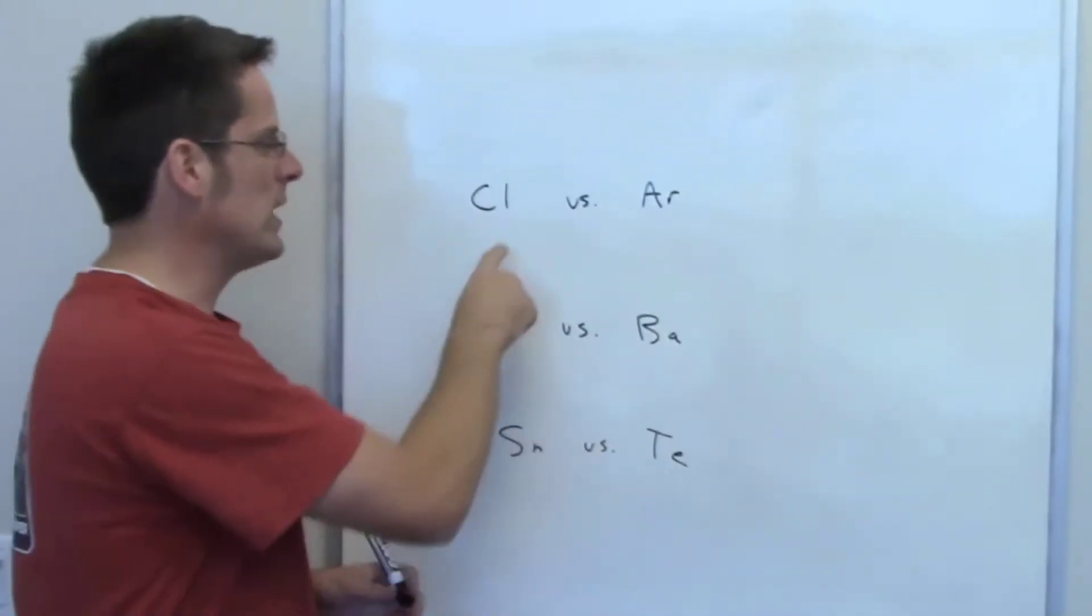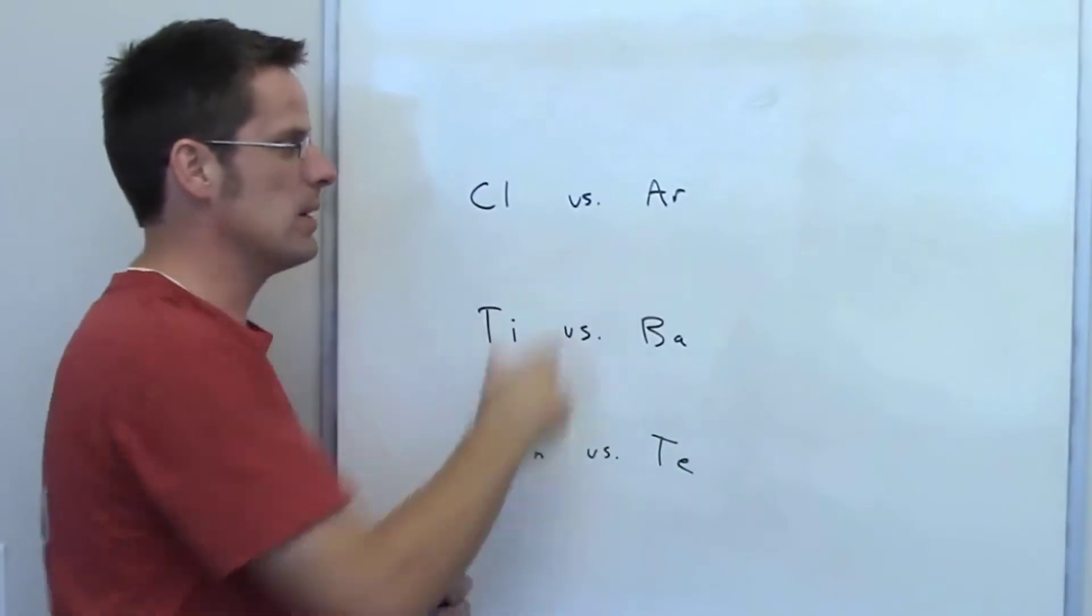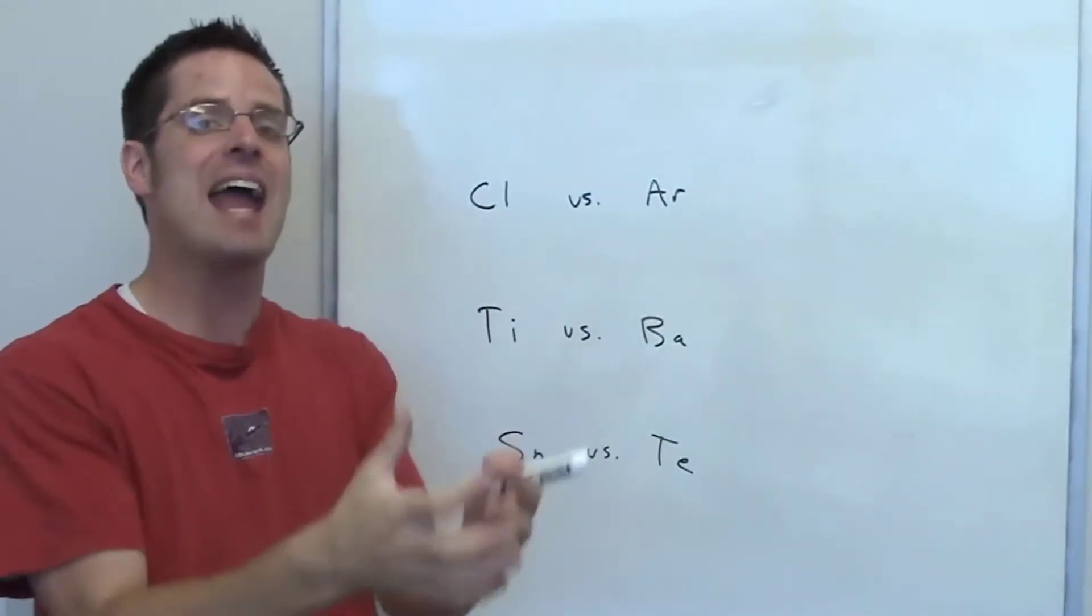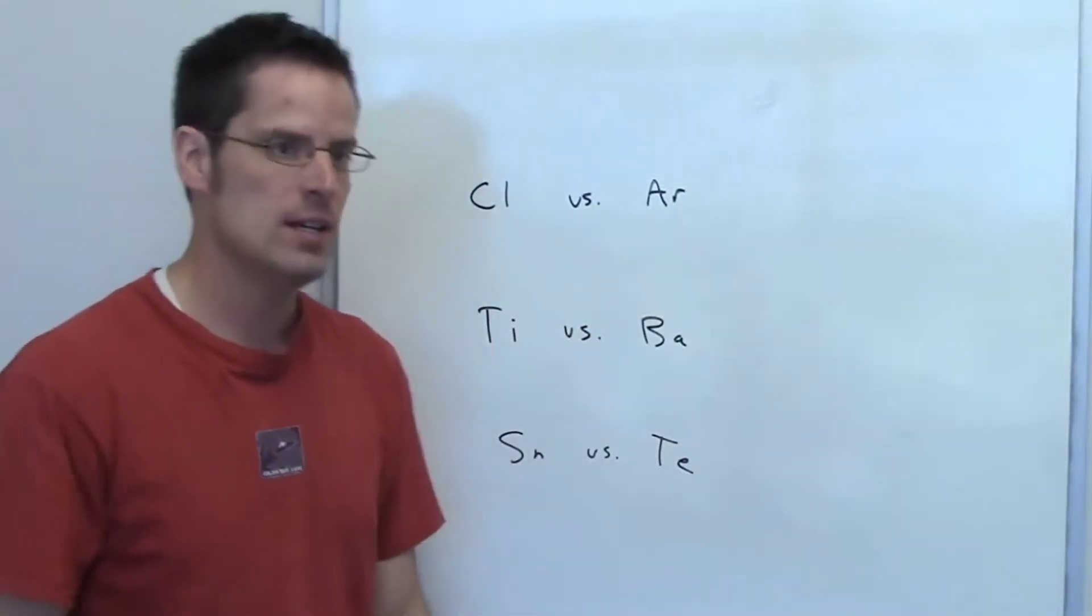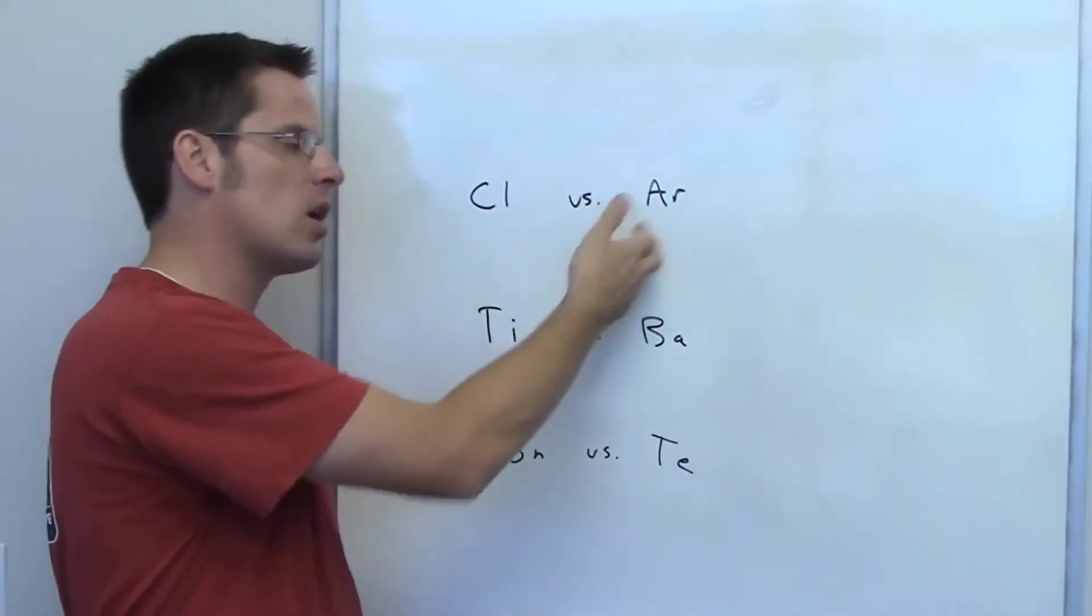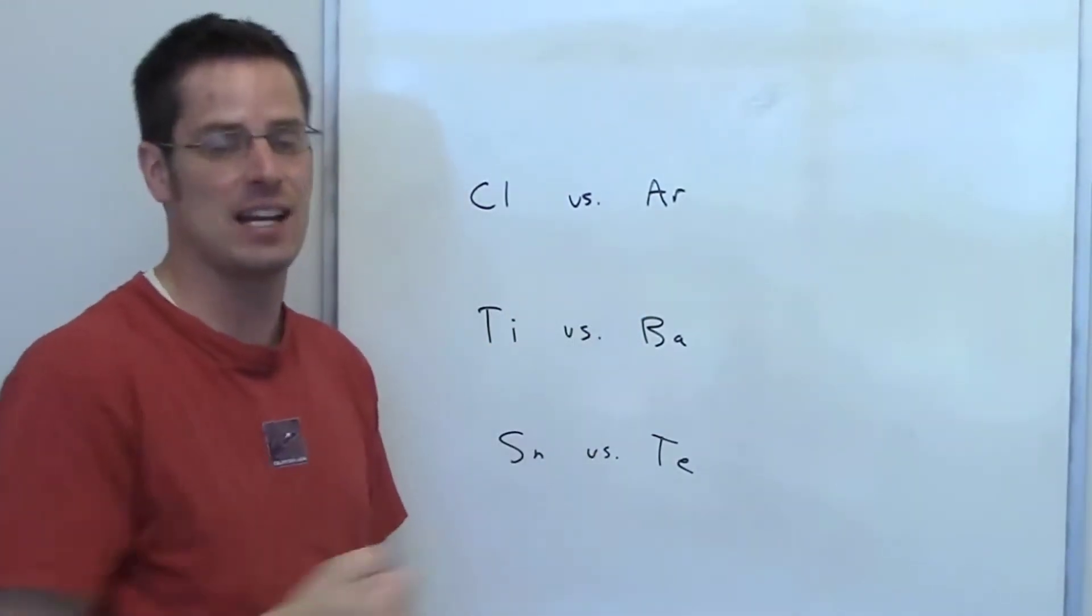In this question, we're asked to determine which element in each of these pairs would be more difficult to ionize - which has the highest ionization energy. So which of these two, chlorine or argon, would be more difficult to take an electron away from?